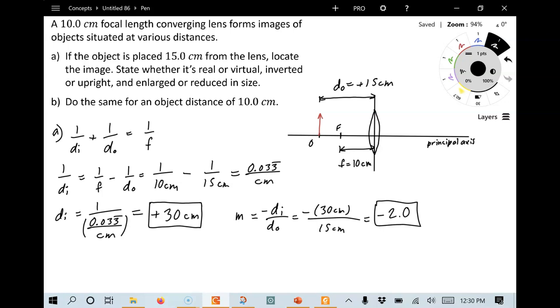We can say, let's see, because of the minus sign here, this means it's inverted. Because of the magnification 2.0, that means it's enlarged.